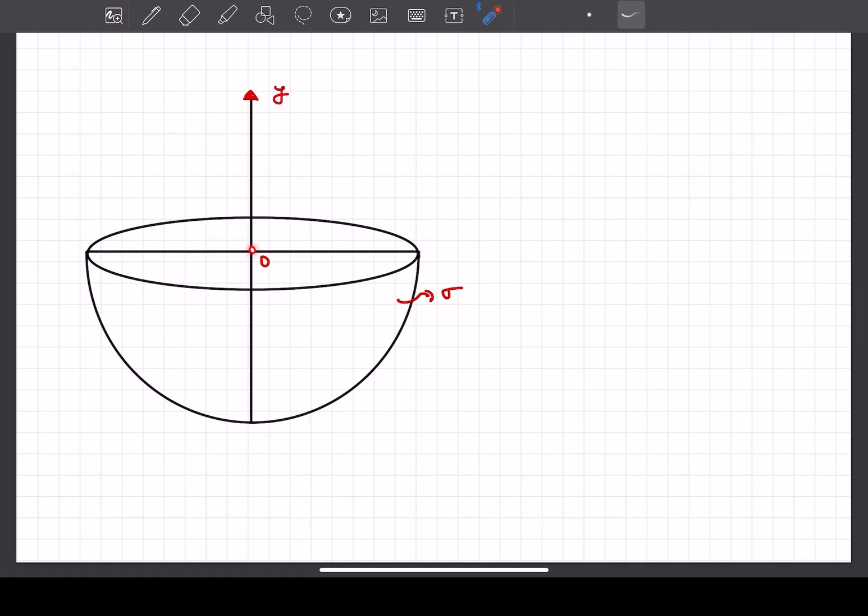First of all, by symmetry we can easily see that the electric field will be along the positive y direction. The reason for that is if there was a component of electric field in the rightward direction, and you rotate this hemisphere by 180 degrees, then this rightward electric field should now be in the leftward direction. Whereas if you observe the charge distribution, it is still unchanged, right? If you rotate a hemisphere by 180 degrees, the charge distribution is not going to change.